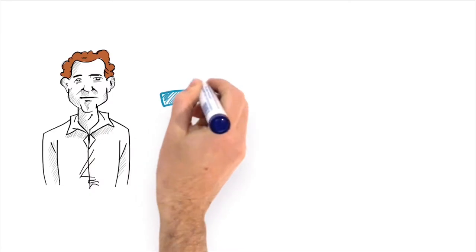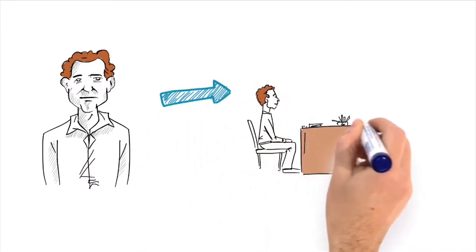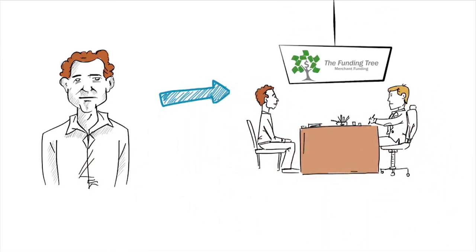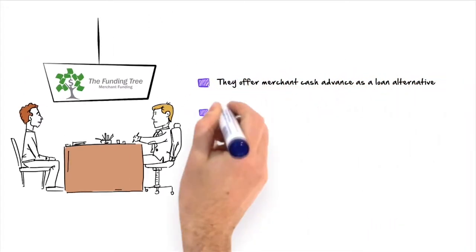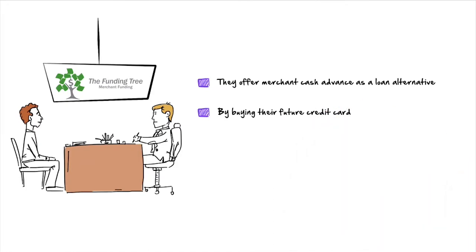John's old friend Tom heard his dilemma and suggested him to get in touch with The Funding Tree. They offer Merchant Cash Advance as a loan alternative by buying their future credit card sales from people just like John.